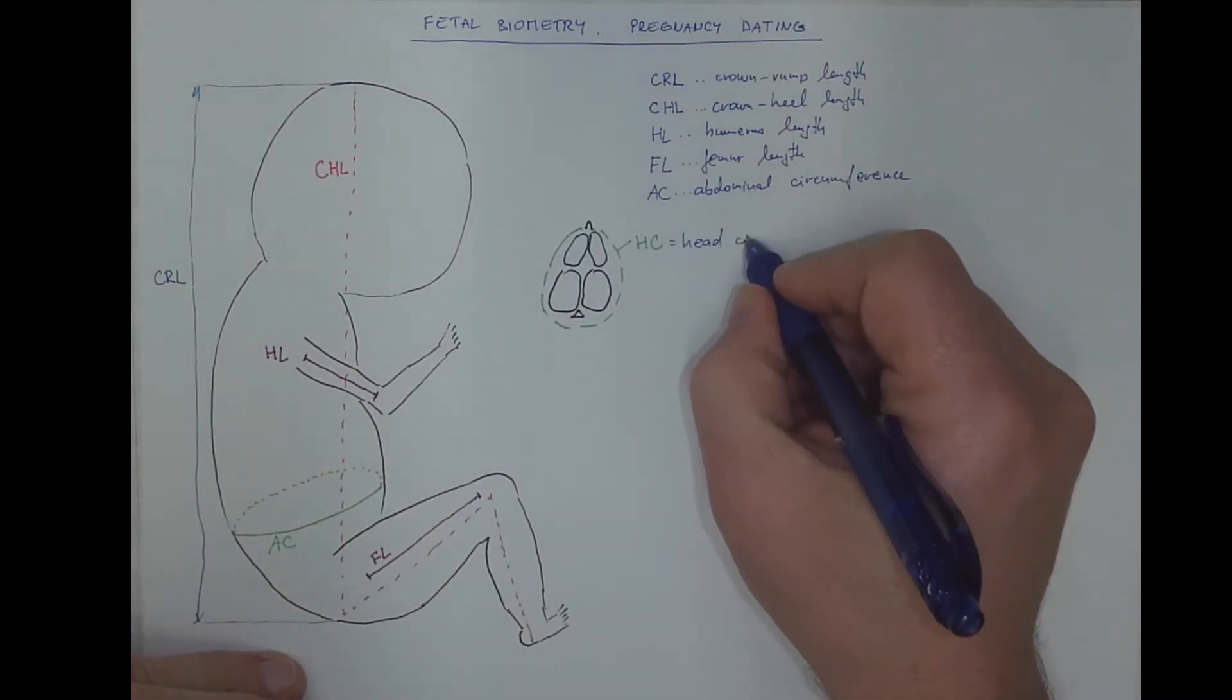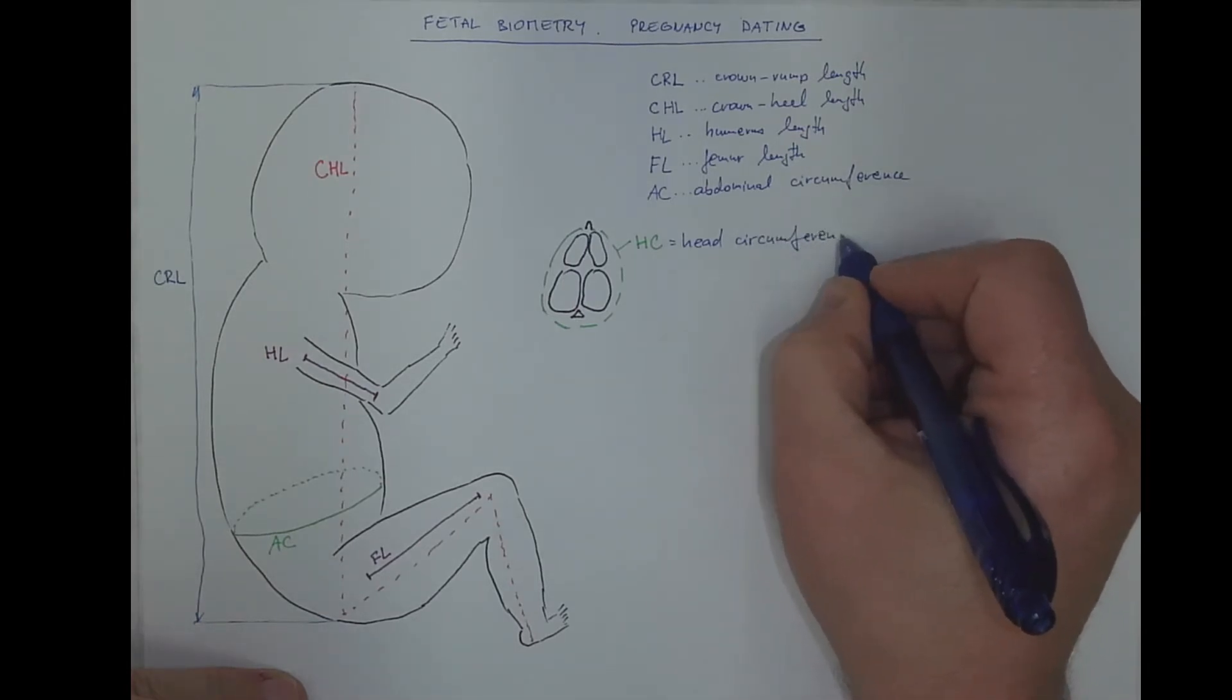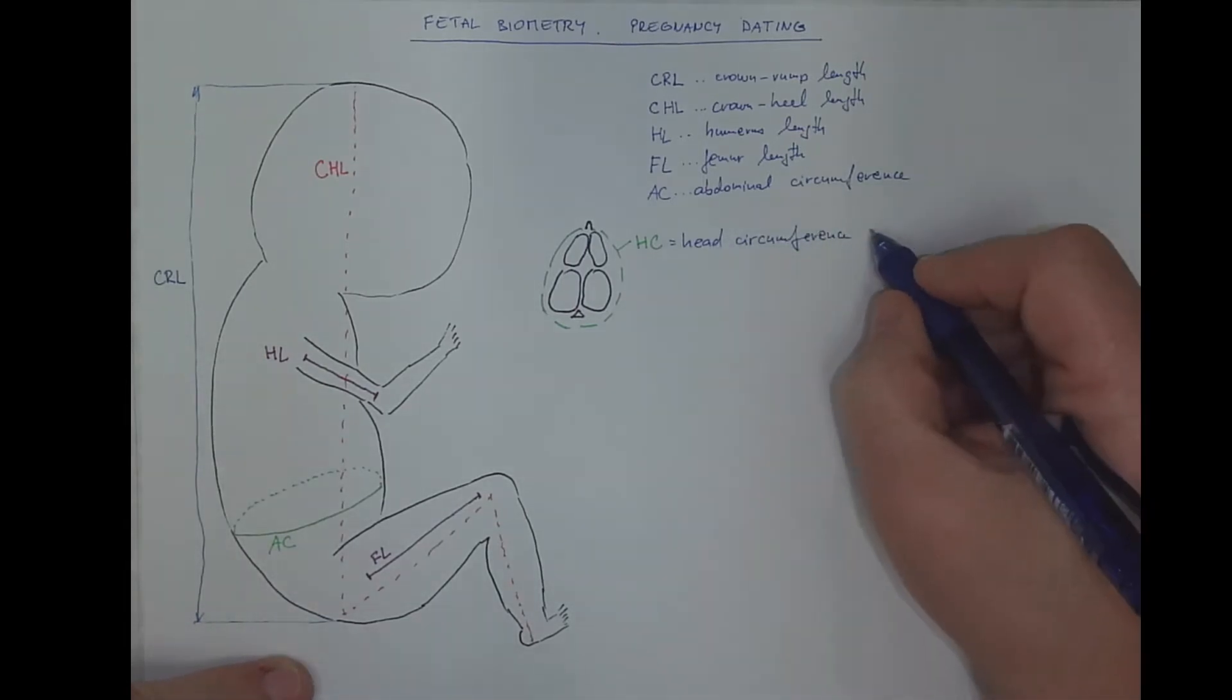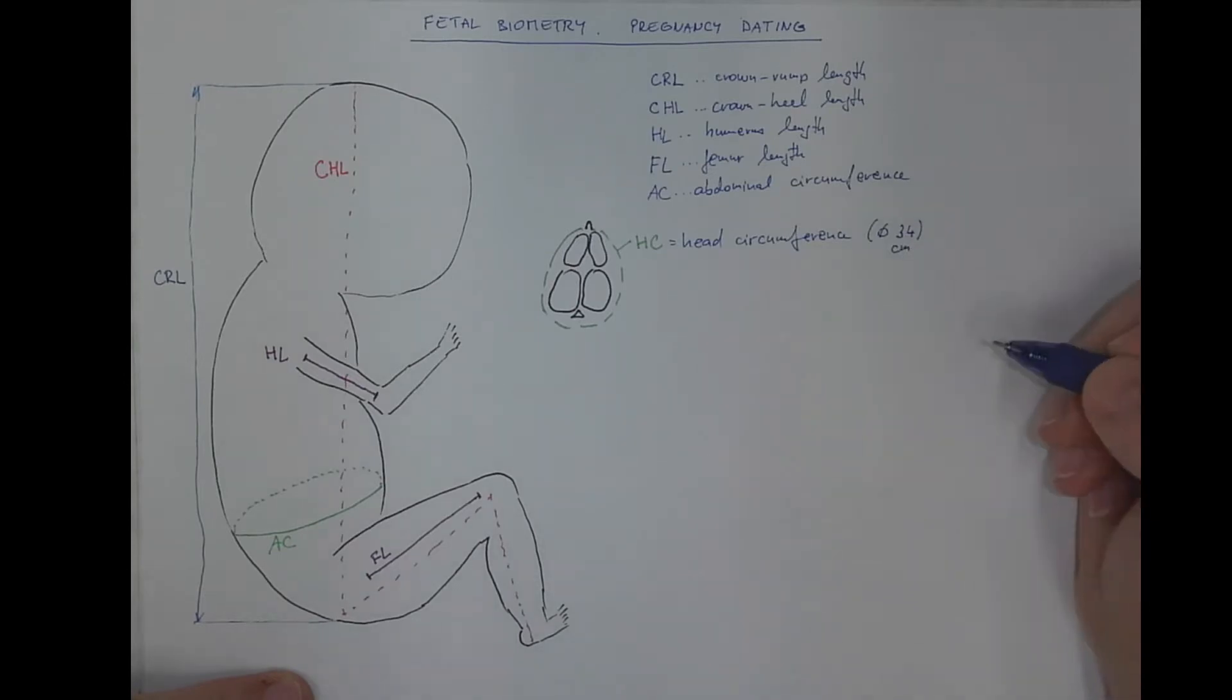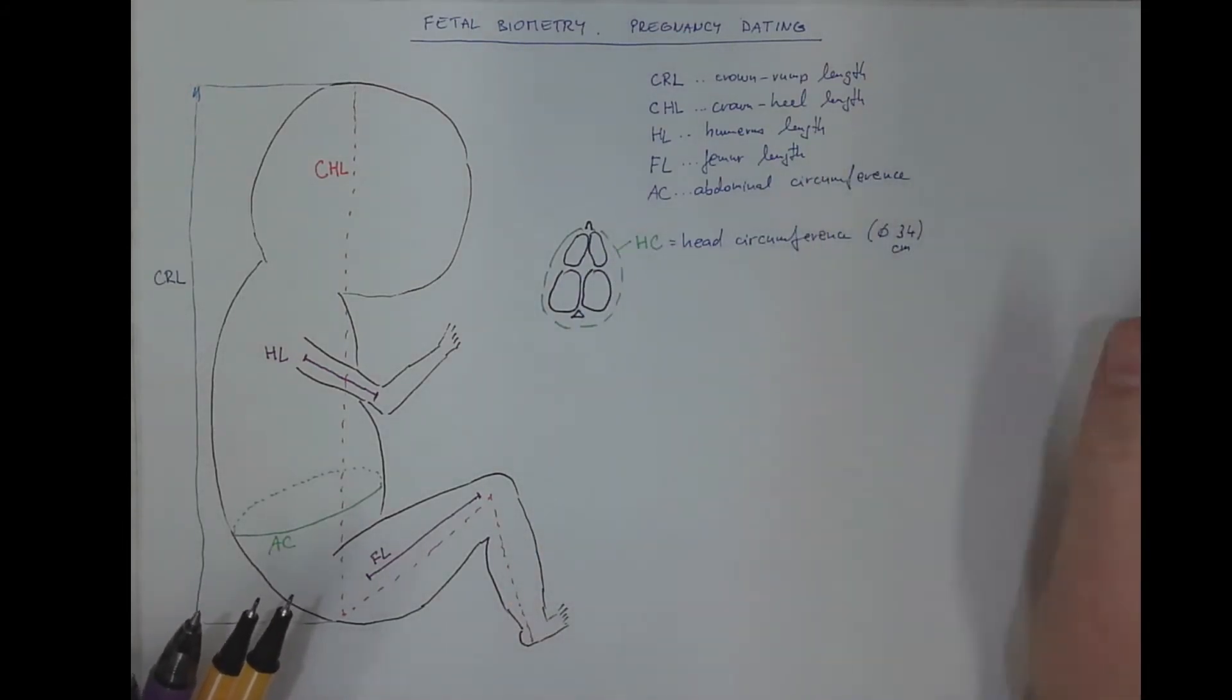The head circumference. And here perhaps it's good to know that a typical average head circumference in a full term fetus or in a newborn would be 34 centimeters. Because the head is commonly the leading point of the parturition mechanism.